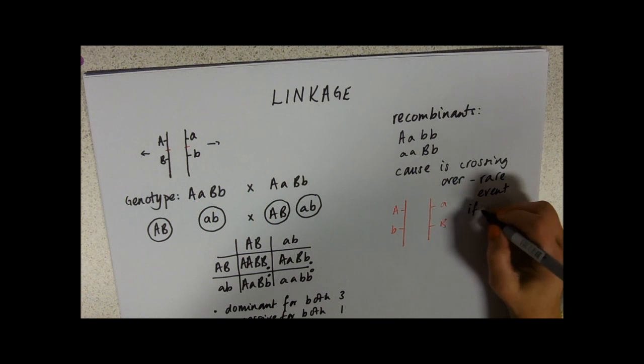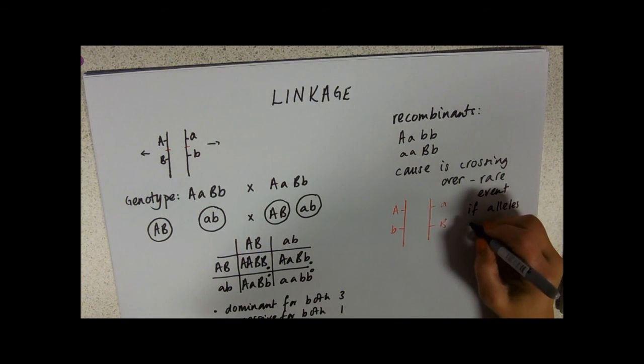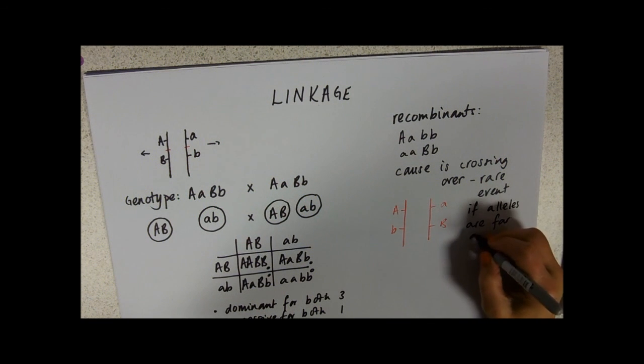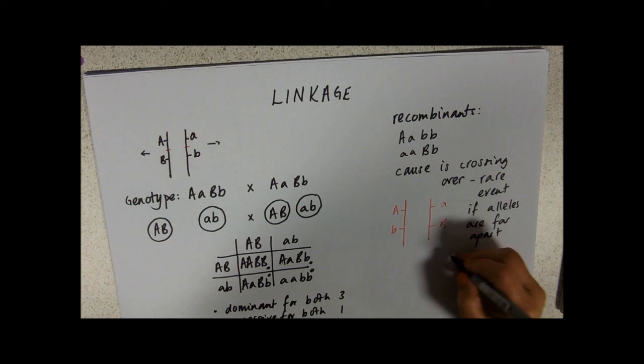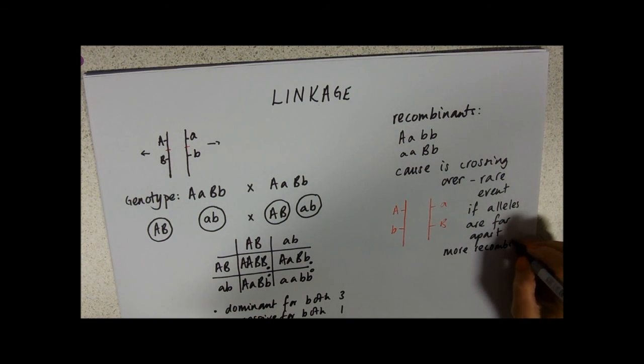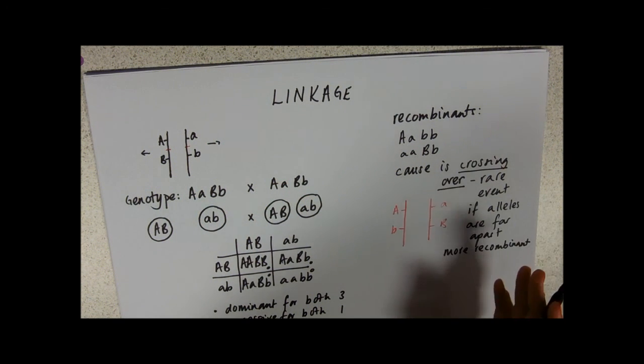What you'll really notice though in crosses is that this is infrequent, so it's a relatively rare event. If the alleles are far apart, it'll happen more frequently and you'll get more recombinants. If they're adjacent genes, you're really unlikely to get crossing over.